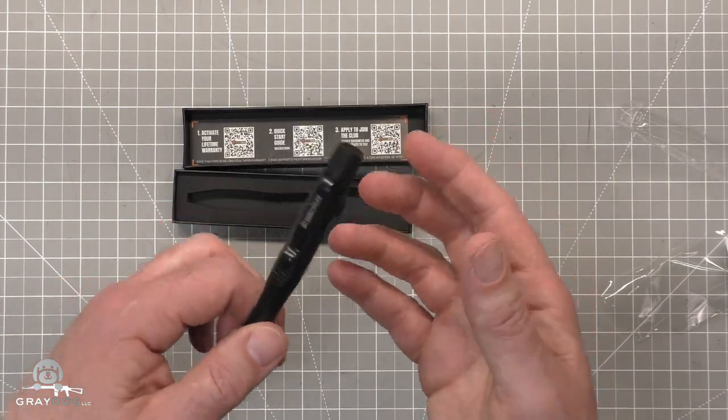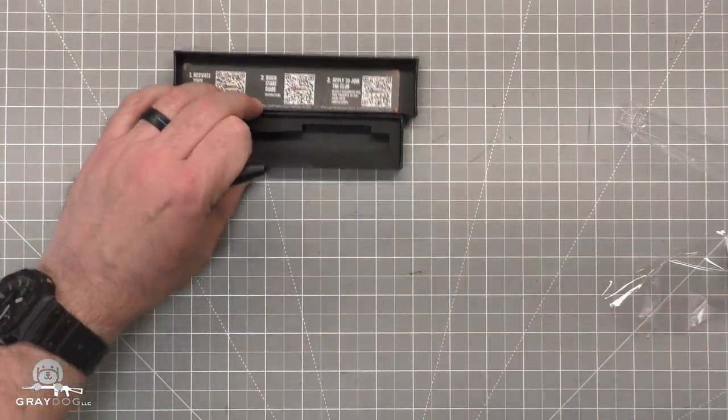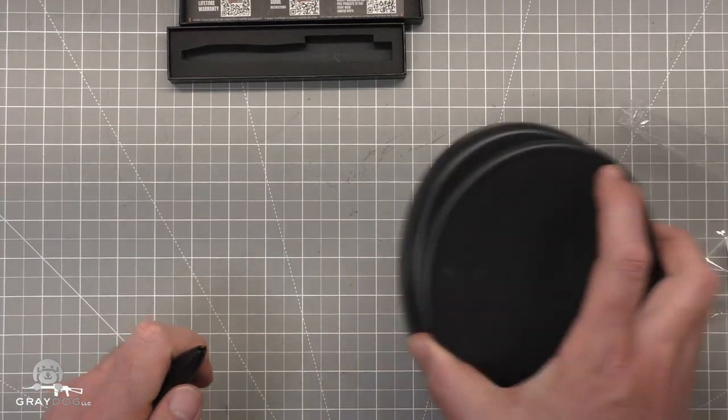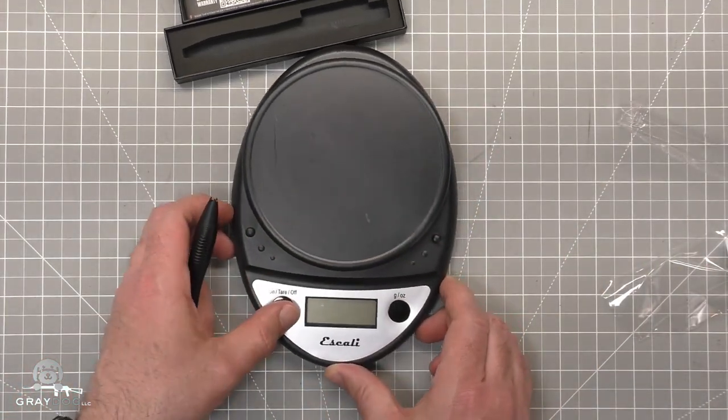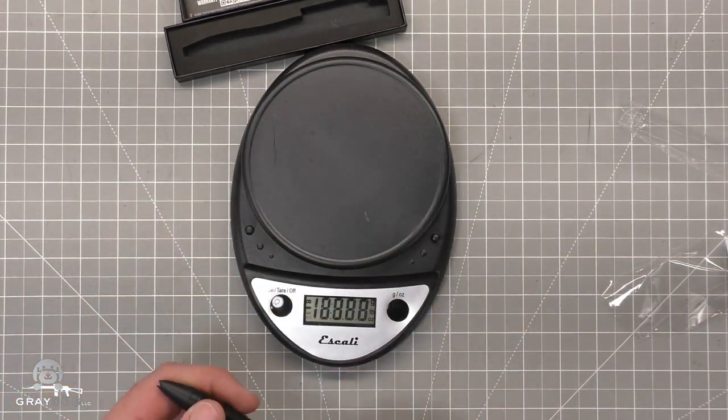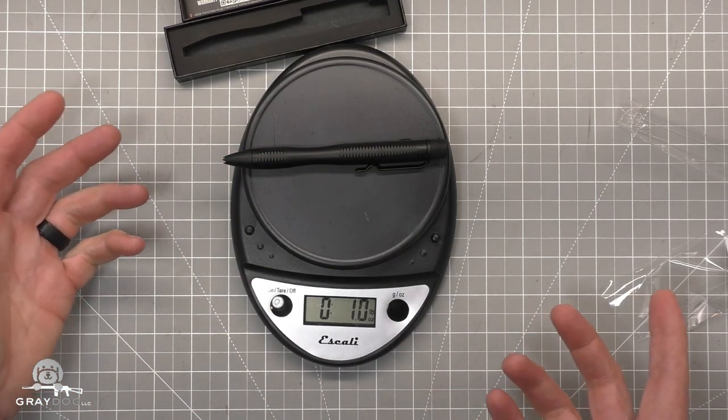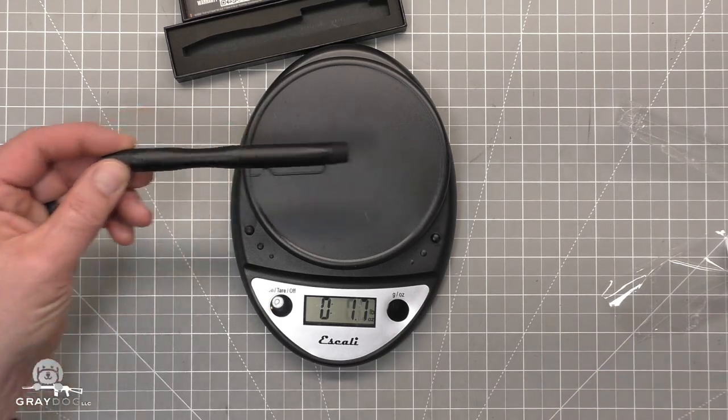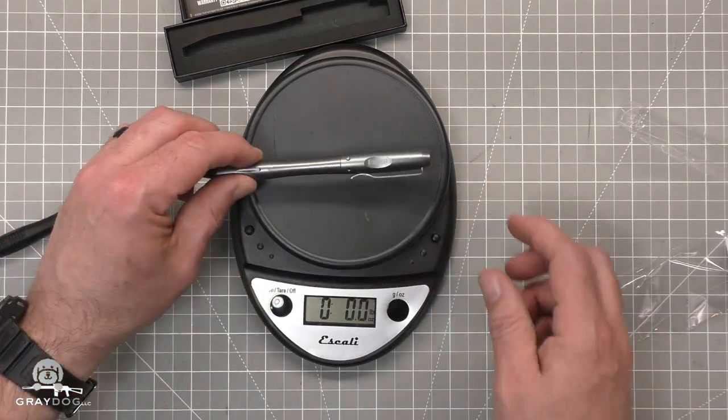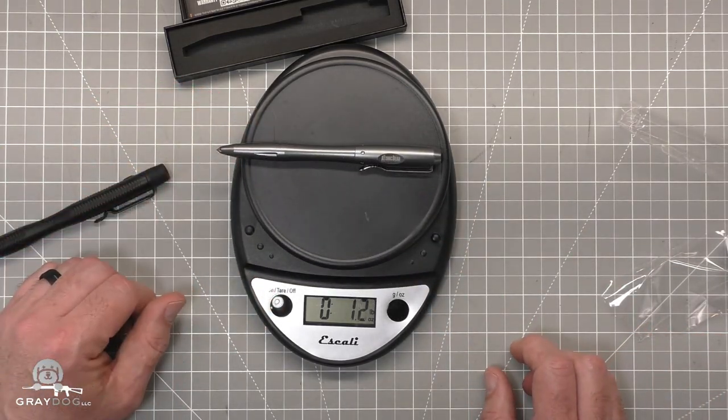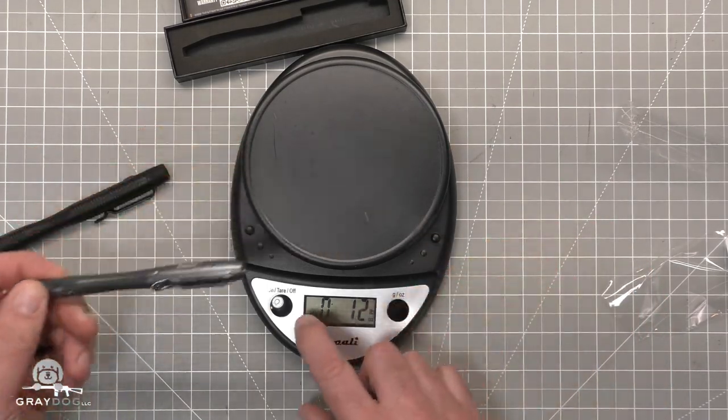So this looks a little less threatening, a little less threatening, but it's polymer so it doesn't weigh a ton. Let's pull out the old scale and see what it says. So one ounce.